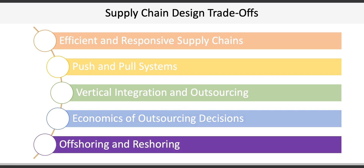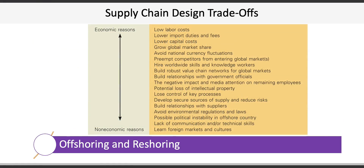The last trade-off in supply chain design relates to offshoring versus reshoring. Offshoring is building, acquiring, or moving process capabilities from a domestic location to another country while maintaining ownership and control. An example is Dell taking its customer support center to India. Reshoring is the process of moving operations back to a company's domestic location — this happened when Dell, after high levels of customer dissatisfaction with the offshore call center, brought it back to the US. Firms also need to consider both economic and non-economic reasons for offshoring.